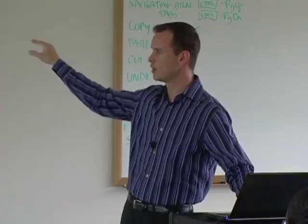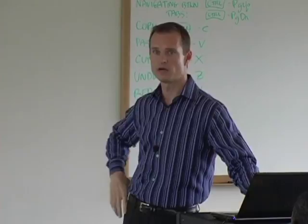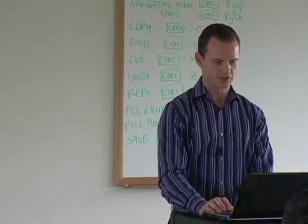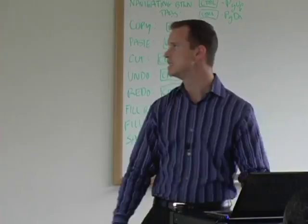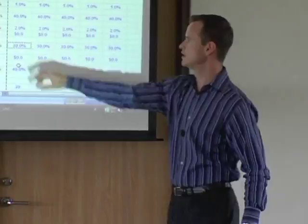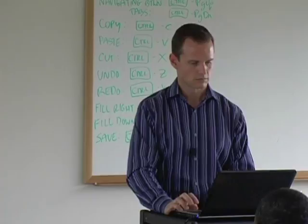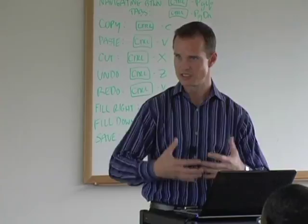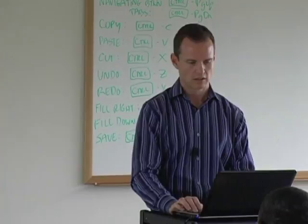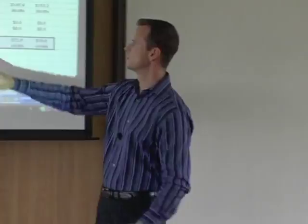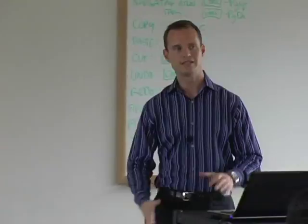No hard codes on the model tab at all — it should be all output. SG&A — we said it was going to be 30% of revenues. So I want to say equals revenues H7 times, Control Page Up, H15 on my assumptions tab — revenues times 30%. It should give me $63 million for SG&A. We'll also show SG&A as a percent of revenue: H19 divided by H7, which should be 30%. Fill to the right, F9 to recalc. You should see SG&A dollar amounts increasing from 63 to 76.6 by year five, but as a percent of sales staying at 30% every year.